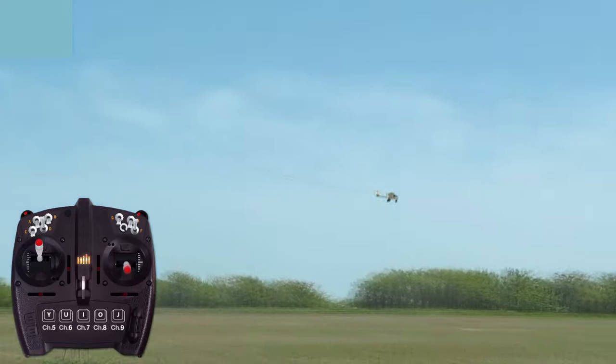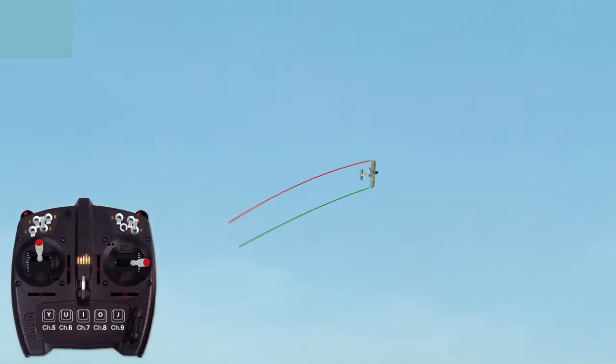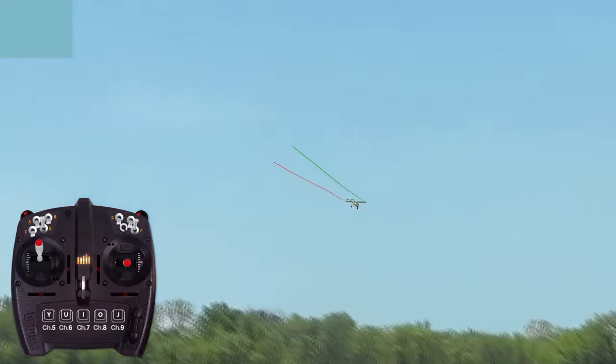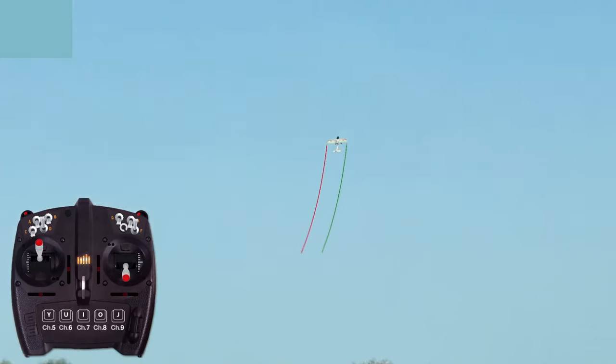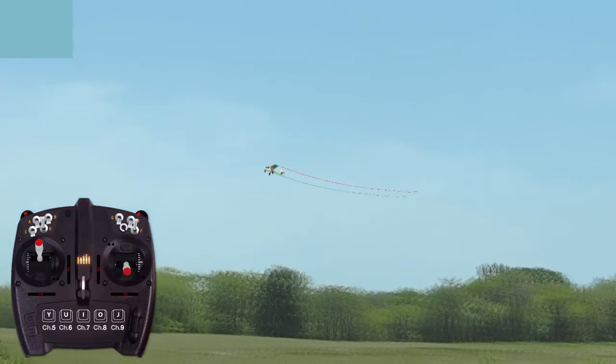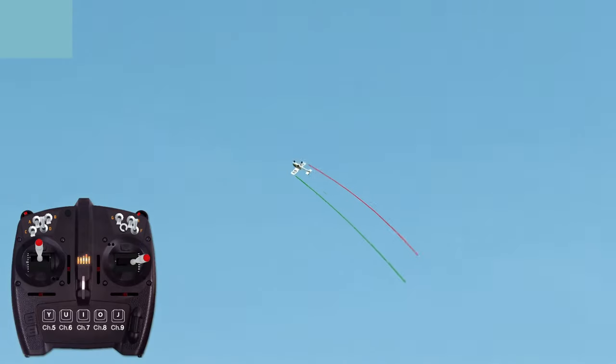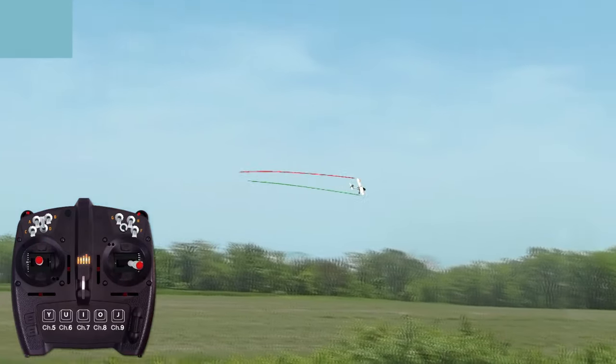Switching to conventional control experienced mode removes any artificial bank or pitch limits. As such, the plane will do whatever the pilot tells it to do, whether right or wrong. The most important aspect of flying with conventional controls is understanding that holding in the aileron will cause the plane to overbank and enter a spiral dive.